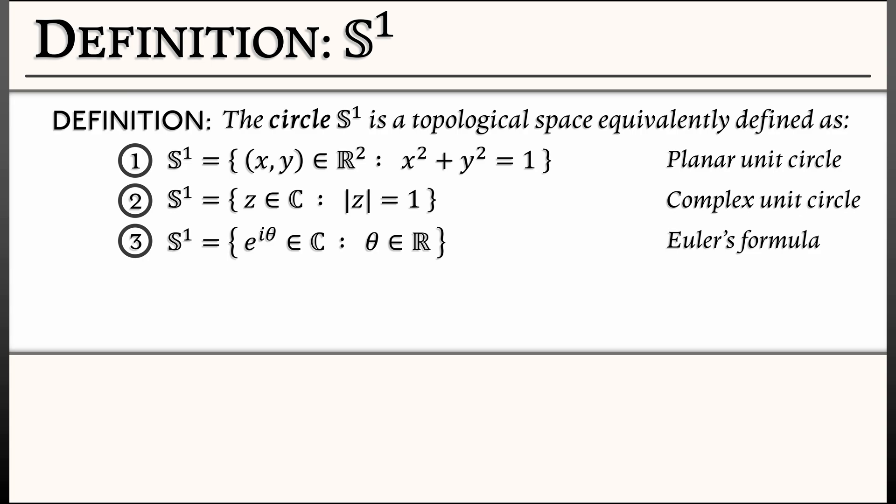But there's something funny that happens in that that angle really only needs to be defined up to multiples of 2π. So, what if we just restricted that parameter to the interval from 0 to 2π so that we're only going around that circle once? That's great, except for the fact that we have to glue together. We have to identify 2π with 0.